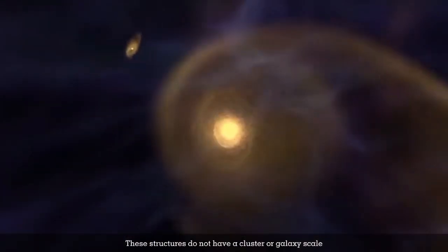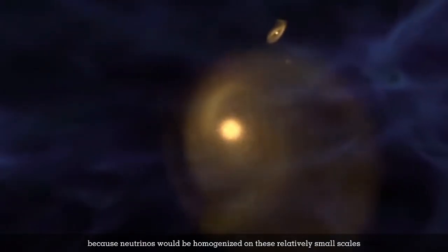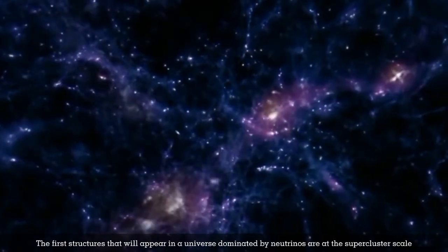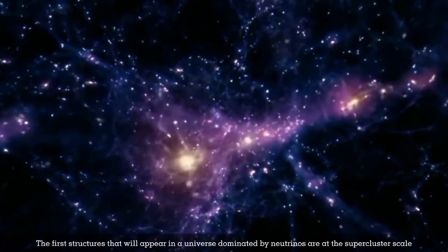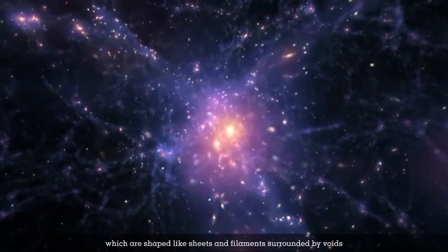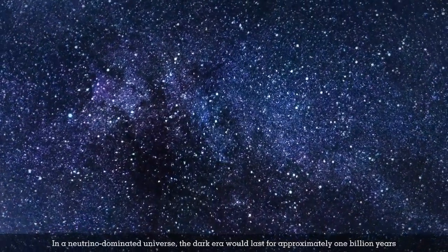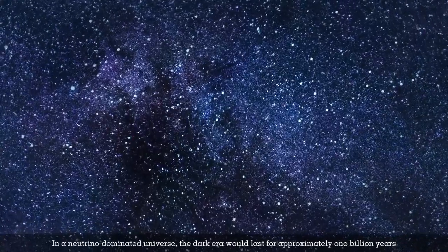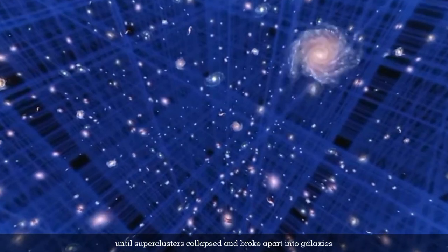These structures don't have a cluster or galaxy scale because neutrinos are homogenized on these relatively small scales. The first structures in a neutrino-dominated universe are at the supercluster scale, shaped like sheets and filaments surrounded by voids. The Dark Era would last approximately one billion years until superclusters collapsed and broke apart into galaxies.